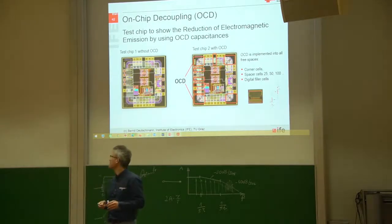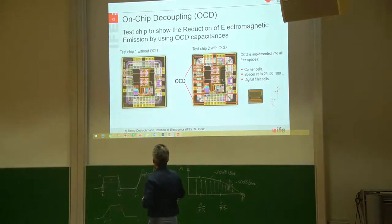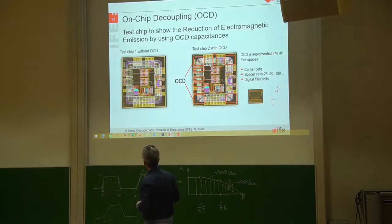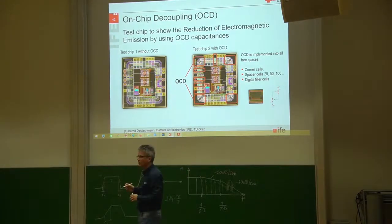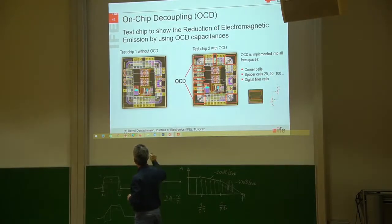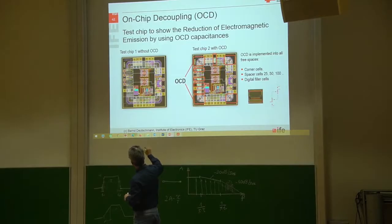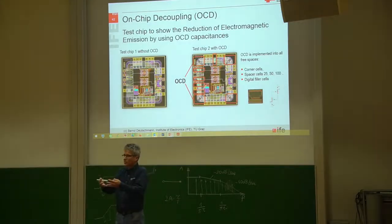Here you can see our test chip without any on-chip decoupling. In our test chip there was a lot of space, so we filled every empty spot as good as possible. Usually the empty spots are the corner cells here—the corner cells are just there to connect the metal rings.